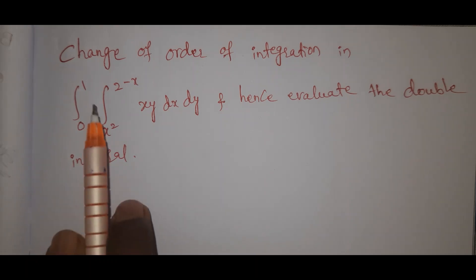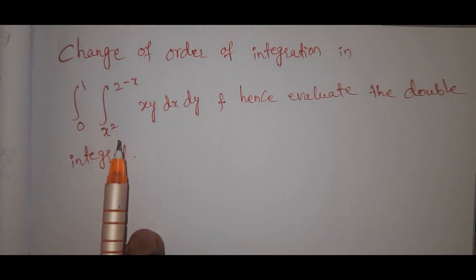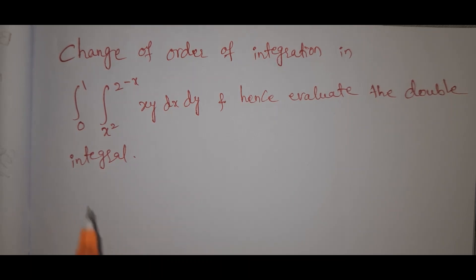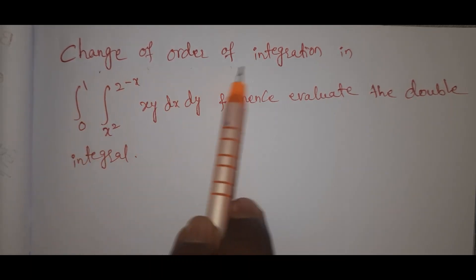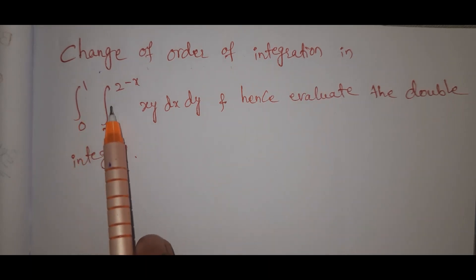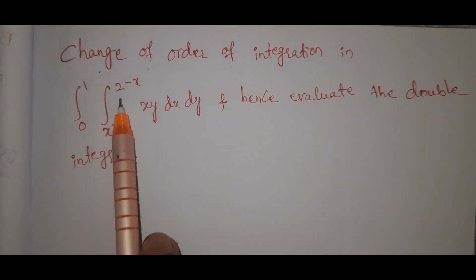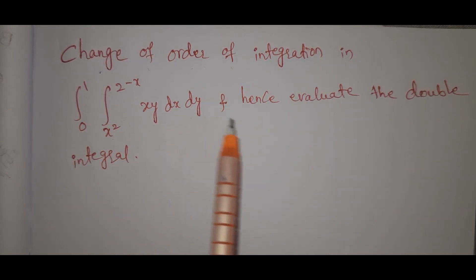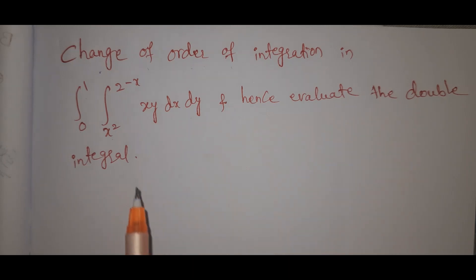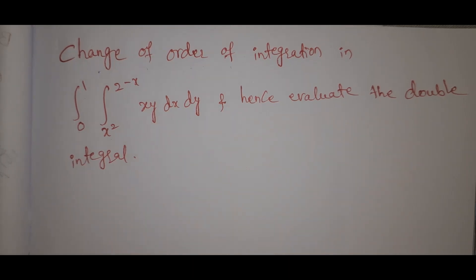This is a very important problem. Change of order of integration in the integral from 0 to 1, integral from x² to 2 minus x, of xy dx dy — and hence evaluate the double integral.